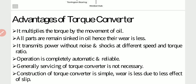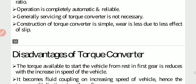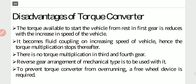Advantages of torque converter: it multiplies the torque by the movement of oil; all parts remain submerged in oil, hence wear is less; it transmits power without noise and shock at different speed and torque ratios; operation is completely automatic and reliable; generally servicing is not necessary; construction is simple; and wear is less due to less effect of slip.